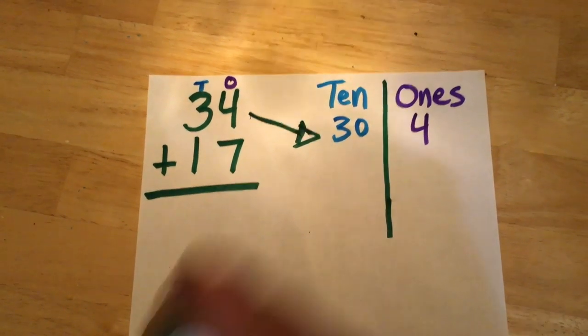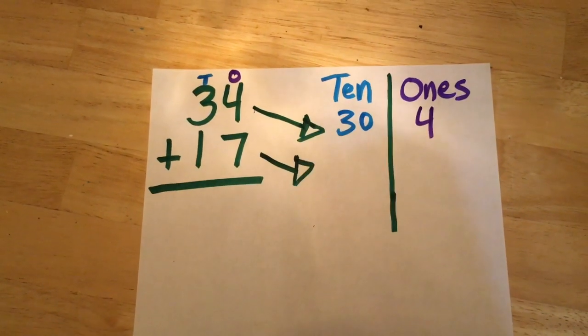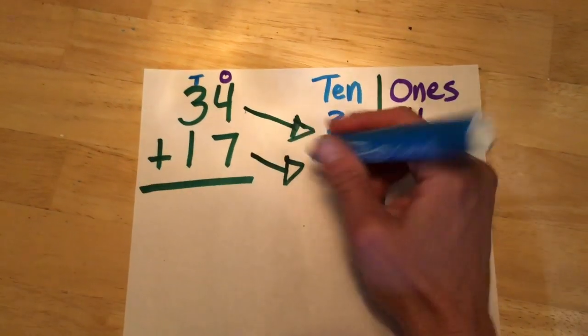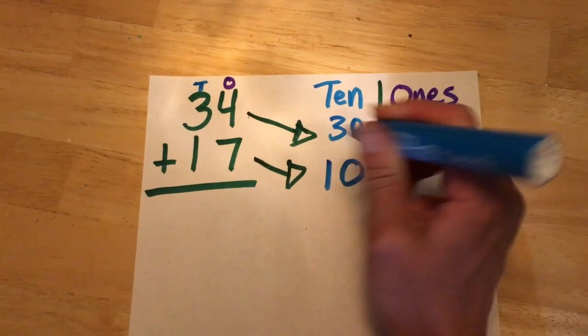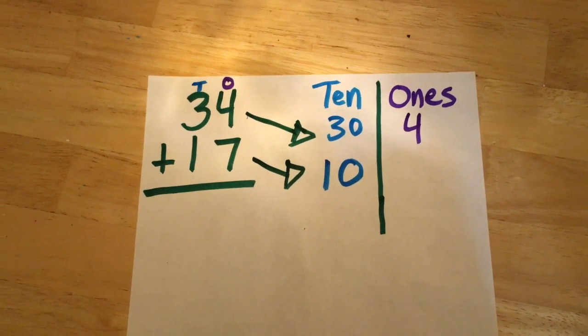Now let's break apart the number 17. We have one ten, so that's 10, and seven ones.